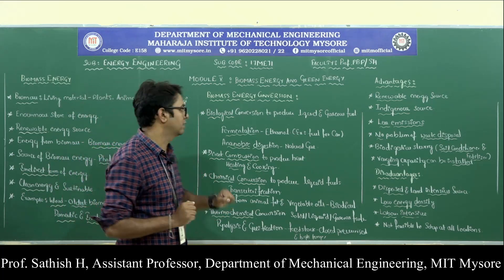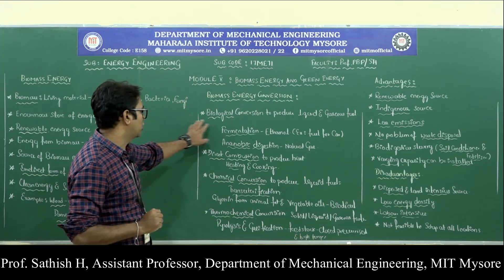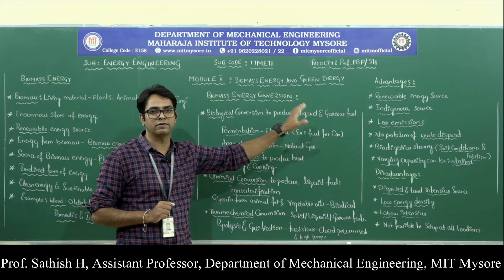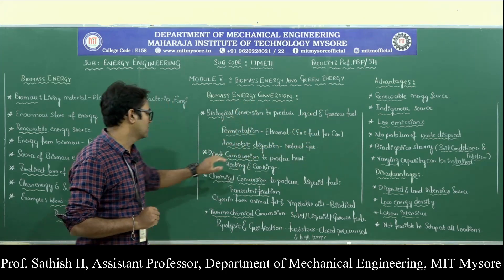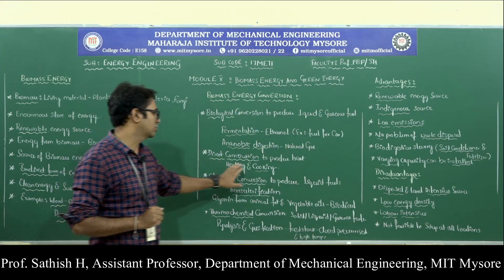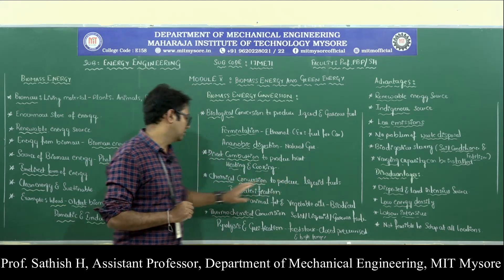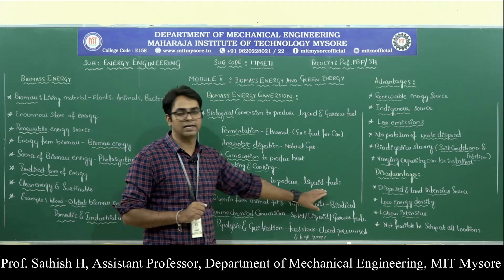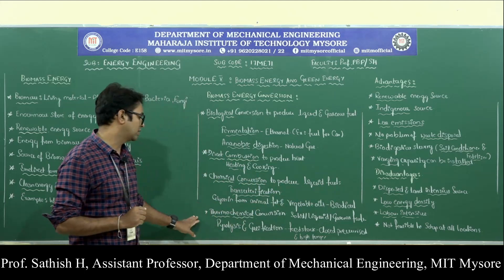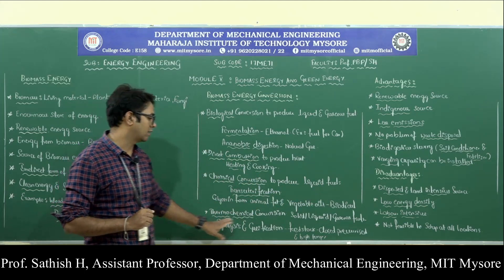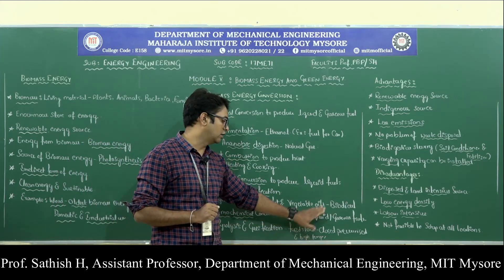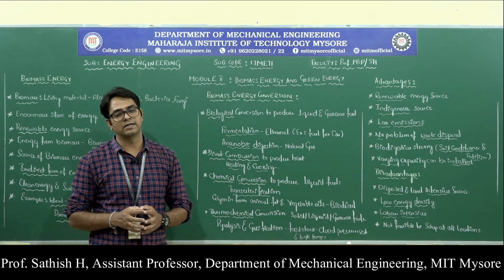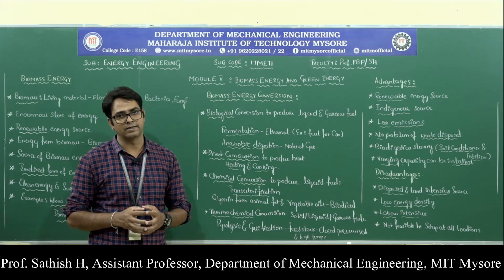These are the various methods used to convert biomass into useful forms of energy. To repeat: the first is biological conversion to produce liquid and gaseous fuel, the second is direct combustion to produce heat, the third is chemical conversion to produce liquid fuels, and the last is thermochemical conversion to produce solid, liquid, and gaseous fuels.